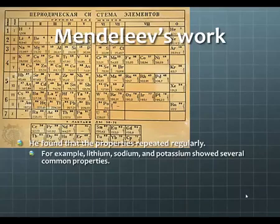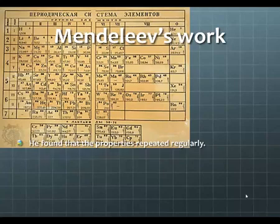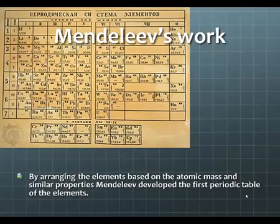So for example, lithium, sodium, and potassium, they showed several common properties. By arranging the elements based on the atomic masses and similar properties, Mendeleev developed the first periodic table of the elements.